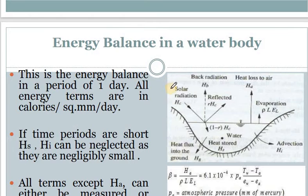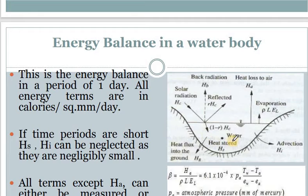This is the diagram for the energy budget method. As you can see, some solar radiation is being absorbed — the heat stored is represented by H_s, some gets stored into the ground as heat flux H_g.